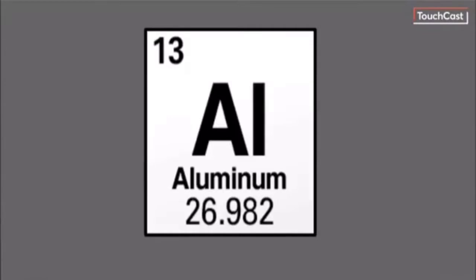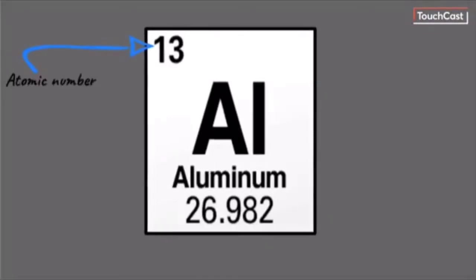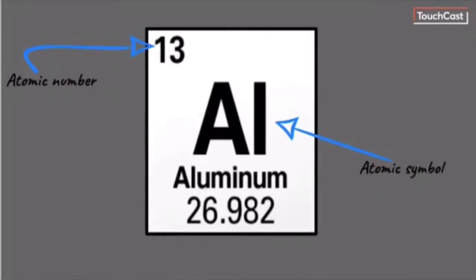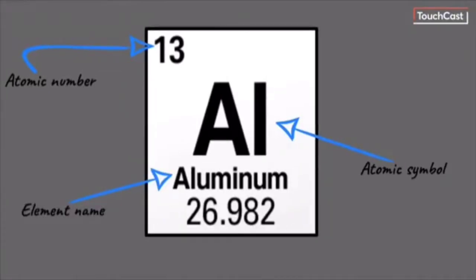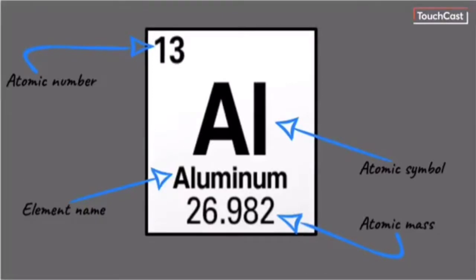This is what the element aluminum looks like on the periodic table. The number 13 represents the atomic number, which is the number of protons in the element. The two letters represent the atomic symbol. The atomic symbol can be one or two letters, with the first letter always being capital and the second letter always being lowercase. This is the element name, which is the full name of the element — aluminum. This number is the atomic mass, which is the average number of protons and neutrons added together.